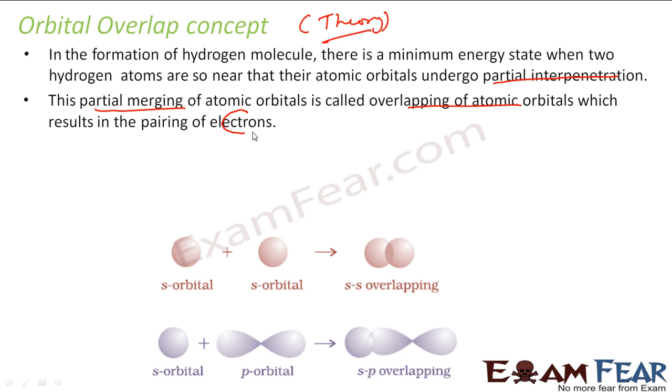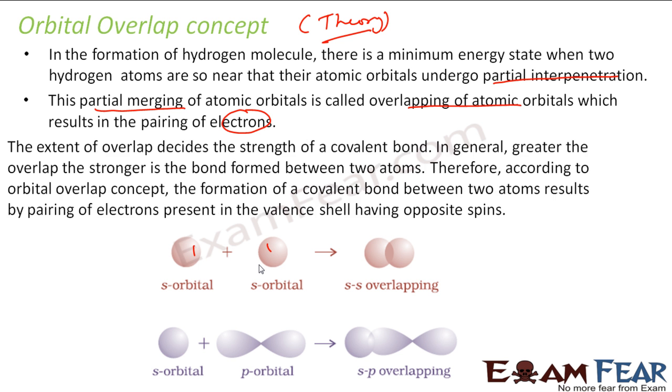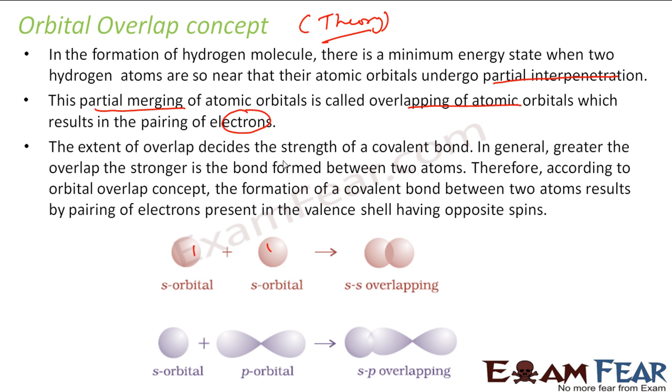This is the result of electron pairing. There is one electron here, one electron here, and they pair up. The extent of overlap determines the strength of the covalent bond. If the overlap is more, strength is more. If overlap is less, strength is less.